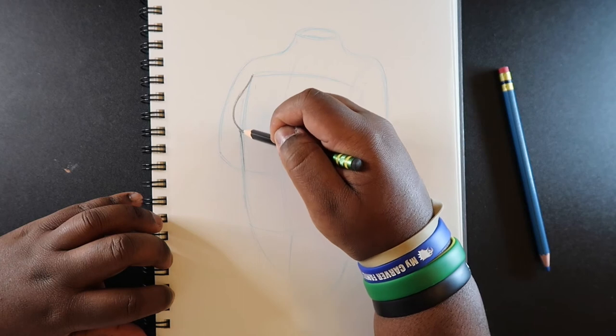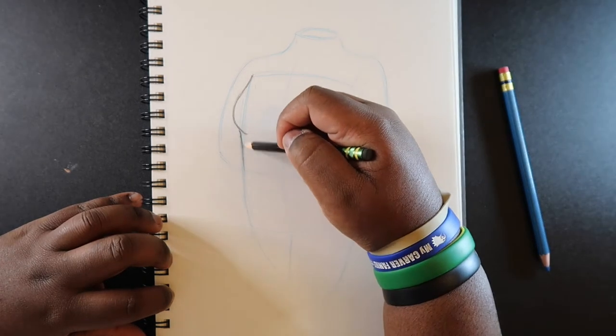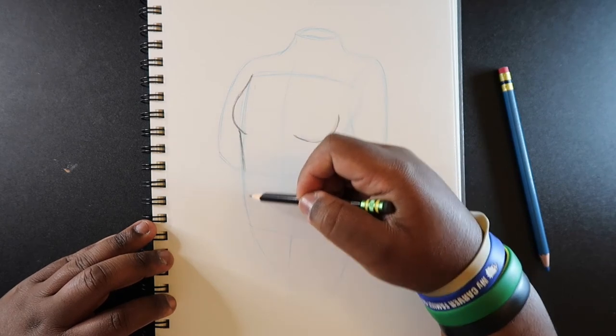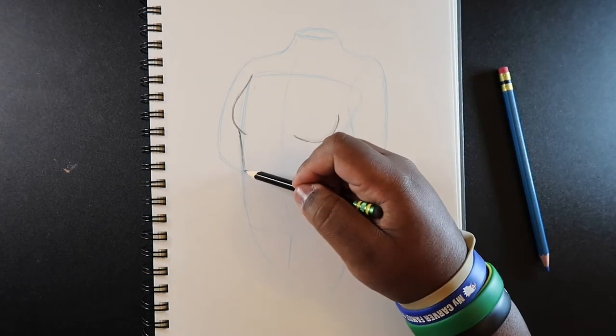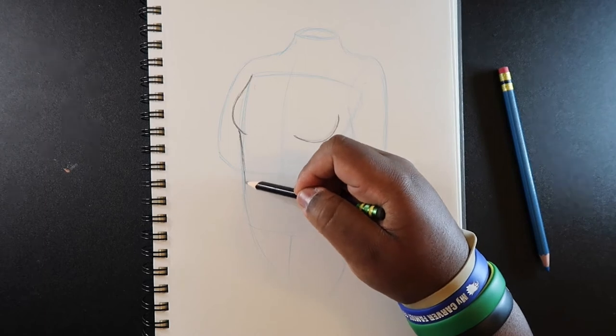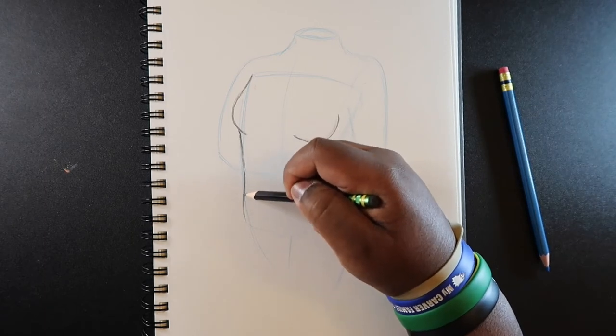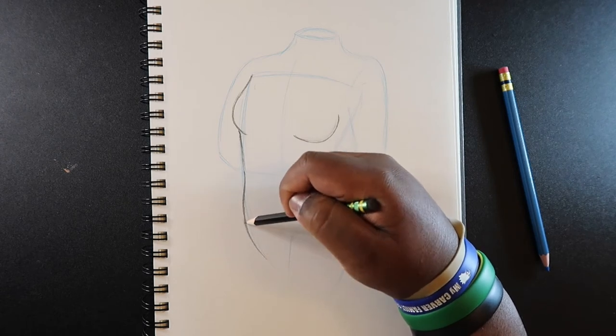And then coming off of this breast, I'm going to come back in, I'm going to come inward from the bottom of this breast. And then I'm going to hit that center line here, and then when I hit that, I'm going to come back out just a little bit, and then make sort of the hips.